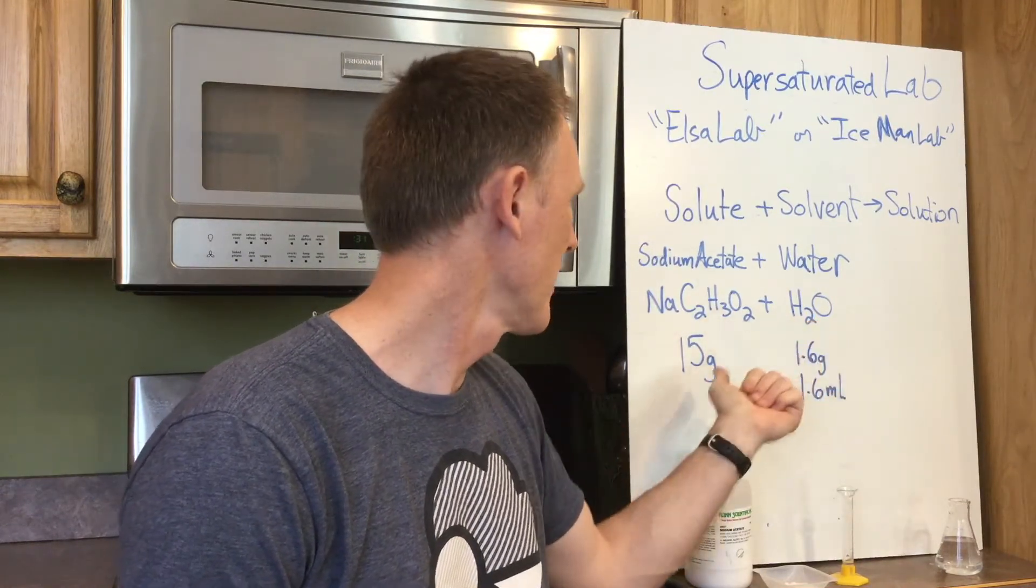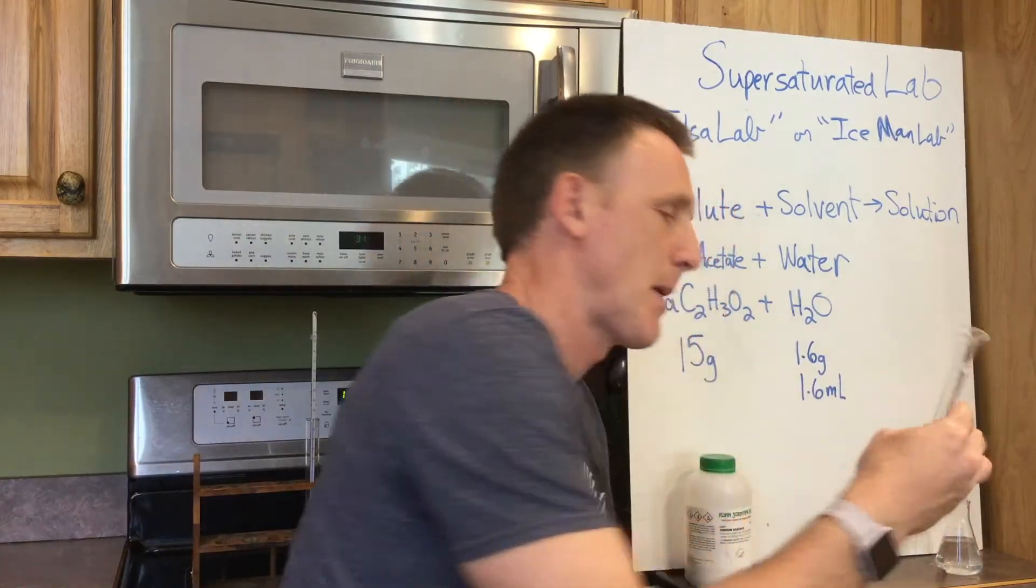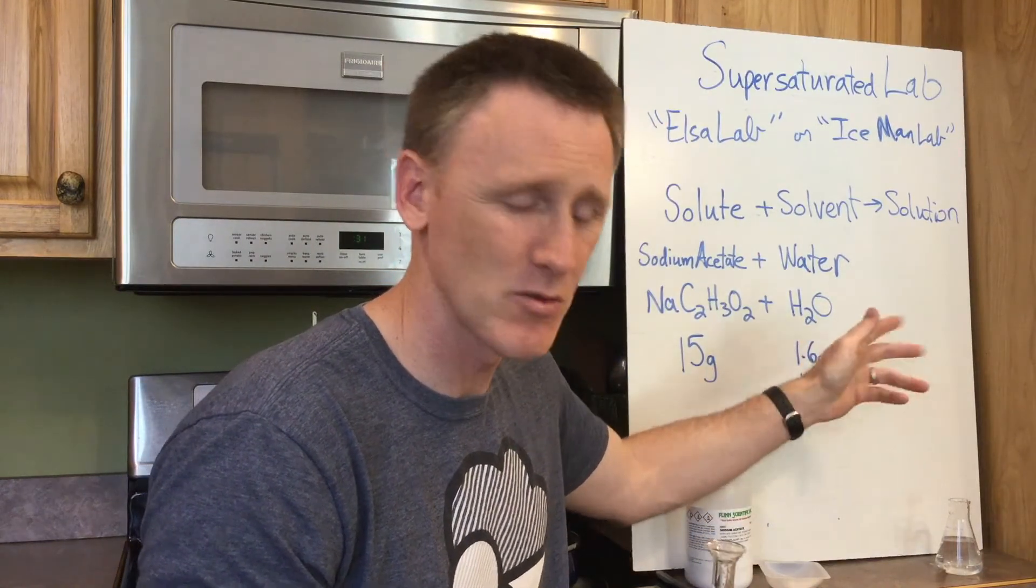We also have water. Now if you look at this, we're going to use 15 grams of sodium acetate and 1.6 milliliters of water. Remember, water's density is one, so I can call it either 1.6 grams or 1.6 milliliters. I'm going to put them together and form a solution, let's try it out.